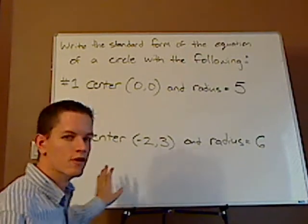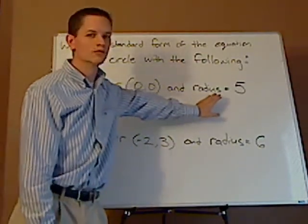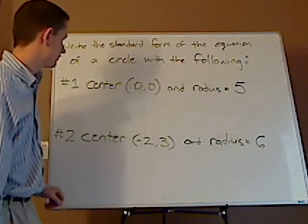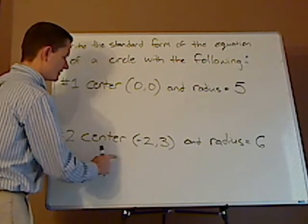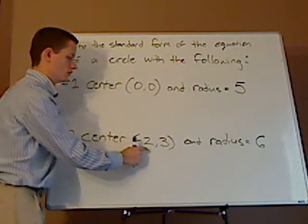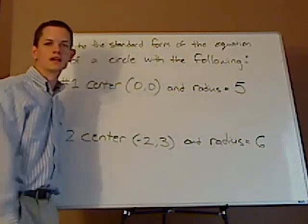So I put two problems on the board. Problem one has a center of (0, 0) and a radius of 5. Problem two has a center of (-2, 3) and a radius of 6.